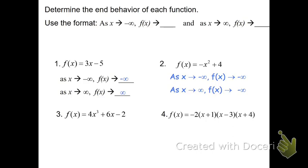On problem 3, we see that it's an odd degree — we have x cubed. It's a positive leading coefficient, so they're going to go in different directions. As we move to the left, it goes down; the right side goes up. So as x approaches negative infinity, f of x goes towards negative infinity. And as x goes to positive infinity, f of x goes towards positive infinity. Because it's odd, they go in different directions. Positive leading coefficient means the signs match — negative infinity goes to negative infinity, positive infinity goes to positive infinity.